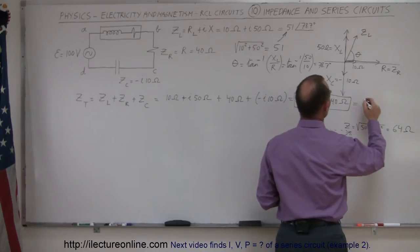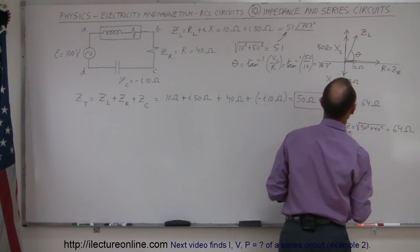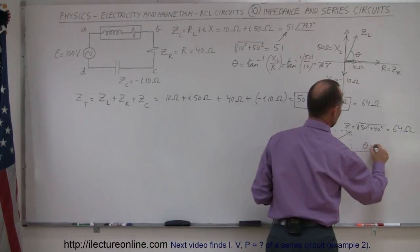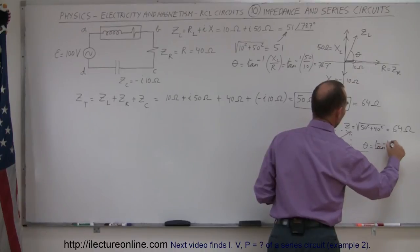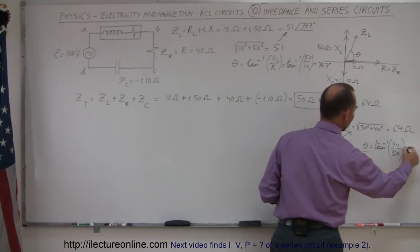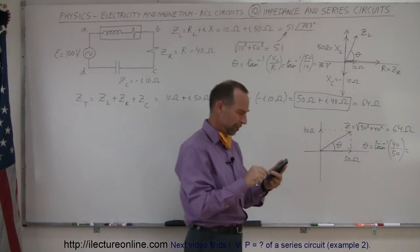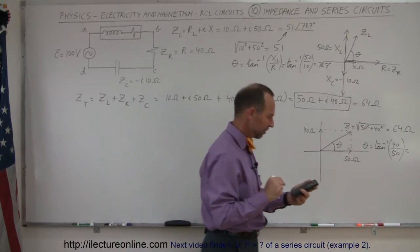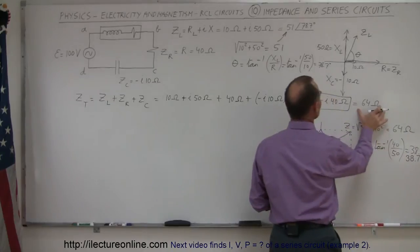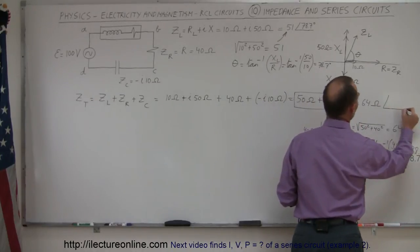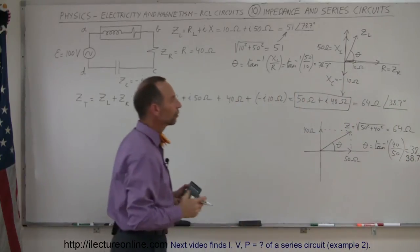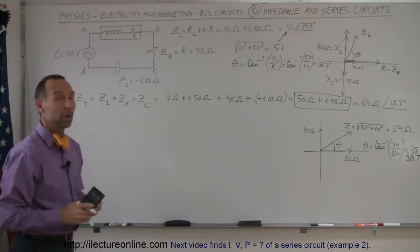So the impedance magnitude is 64 ohms. Now we find the phase angle: theta equals arctan of the opposite side (reactance = 40) divided by the adjacent side (resistance = 50). arctan(40/50) = arctan(4/5) gives us 38.7 degrees. So the total impedance is 64 ohms at an angle of 38.7 degrees ahead of the supply voltage.